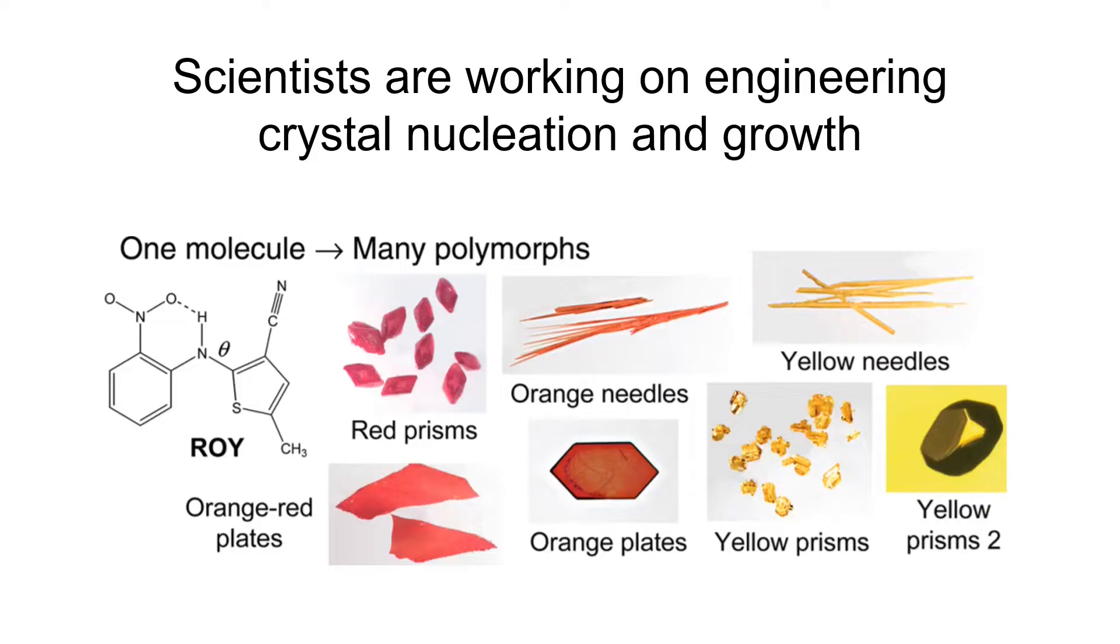Moreover, different conditions of nucleation and growth can generate different crystal structures. Here is an example of this small molecule. Starting from the same molecule, there can be crystal structures with different sizes, shapes, and colors. And that's why it's called ROY: red, orange, and yellow. In pharmaceutics, we pay a lot of attention on crystal structures because different structures have different properties, including mechanical properties, dissolution performance, and final absorption into body.